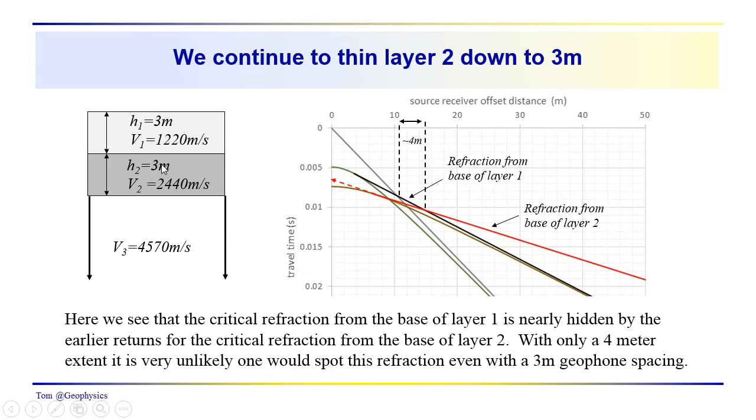Now here we continue to thin the layer. We're thinning it down to 3 meters. It's come down from 9 meters to 6 meters to 3 meters. And this is what our data looks like. Now the refraction from the base of layer 1 is barely visible. It only spans source receiver offsets of 4 meters. So this would be very easy to miss unless you had geophones every meter or every 2 meters. Even 2 meters might not be enough because you'd see the direct arrival here and you'd see the critical refraction here. So you'd have one measurement on the refraction from the base of layer 1. Very unlikely that you would accurately infer the presence of this critical refraction here.